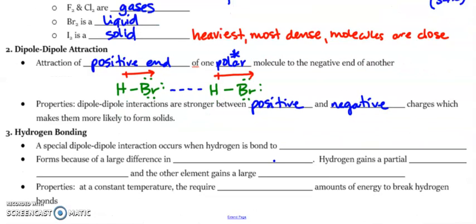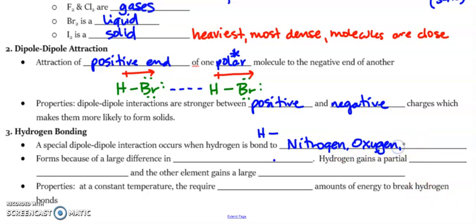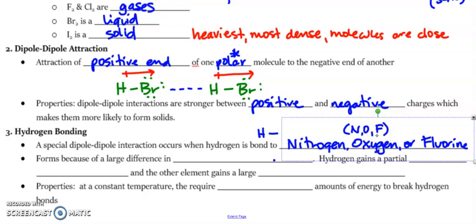The last type is hydrogen bonding. I know it has 'bonding' in the term, but we're not talking about actual bonds like ionic and covalent. This is a very special dipole-dipole that occurs when you have hydrogen literally connected to nitrogen, oxygen, or fluorine — sometimes called NOF. Hydrogen has really low electronegativity and nitrogen, oxygen, and fluorine are really high, so you get a stronger separation — a bigger difference — and it forms because of a large difference in electronegativity.